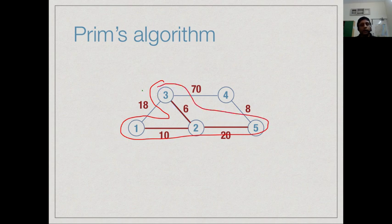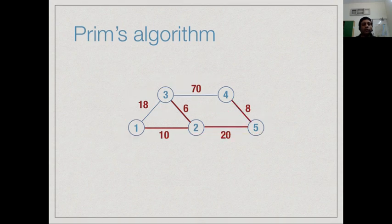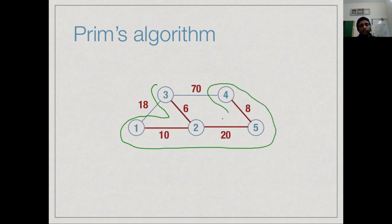This is our given tree. Now we cannot add this we know. So we can either add the edge 70 or the edge labeled with weight 8 and obviously 8 is smaller. So finally we add that and this is the tree that we get. This is the final tree from Prim's algorithm by starting with the smallest edge and incrementally growing the tree.